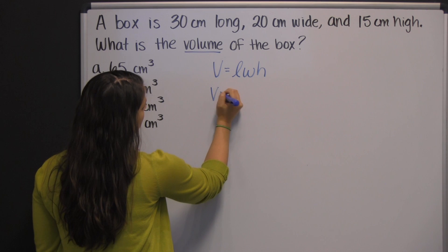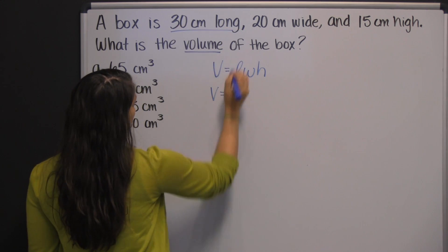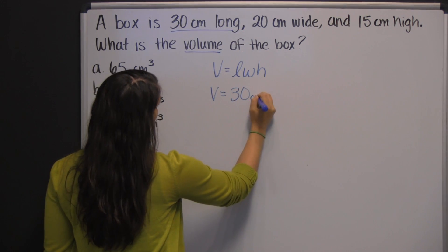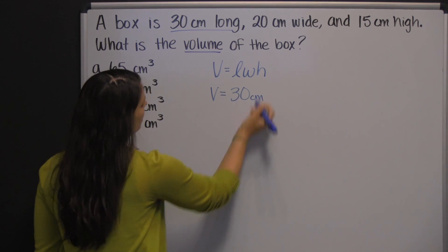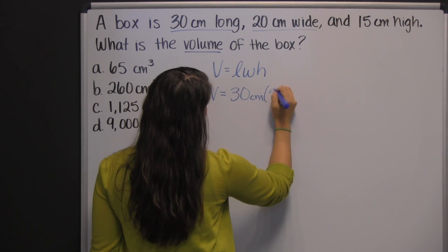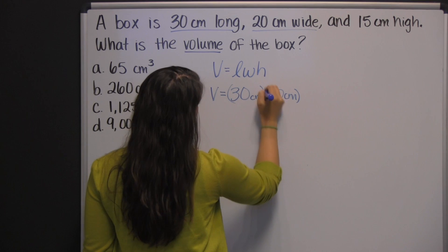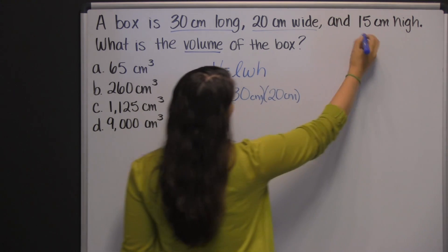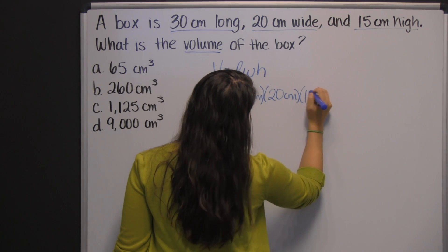So, volume is — here's our length, thirty centimeters, times our width, twenty centimeters, times our height, fifteen centimeters.